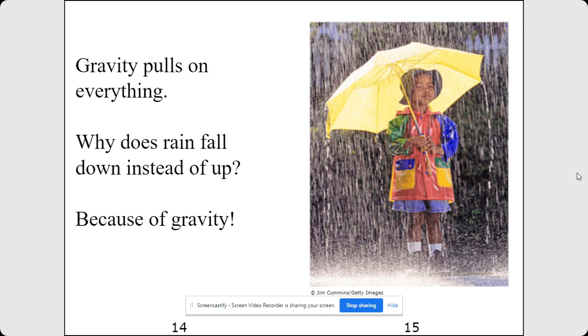Gravity pulls on everything. Why does rain fall down instead of up? Because of gravity.